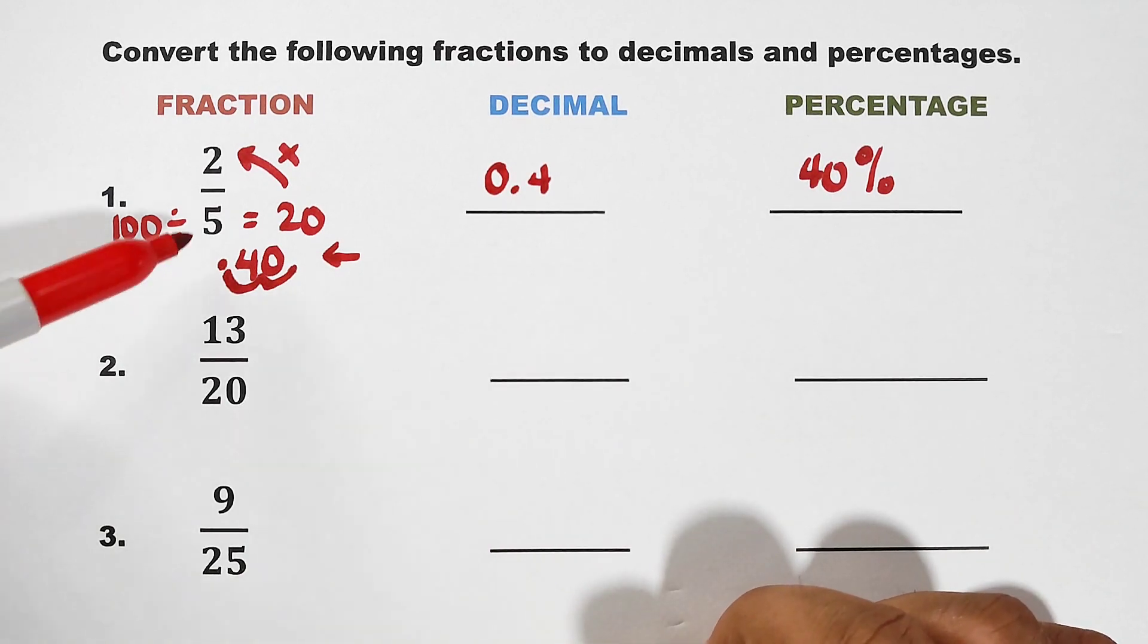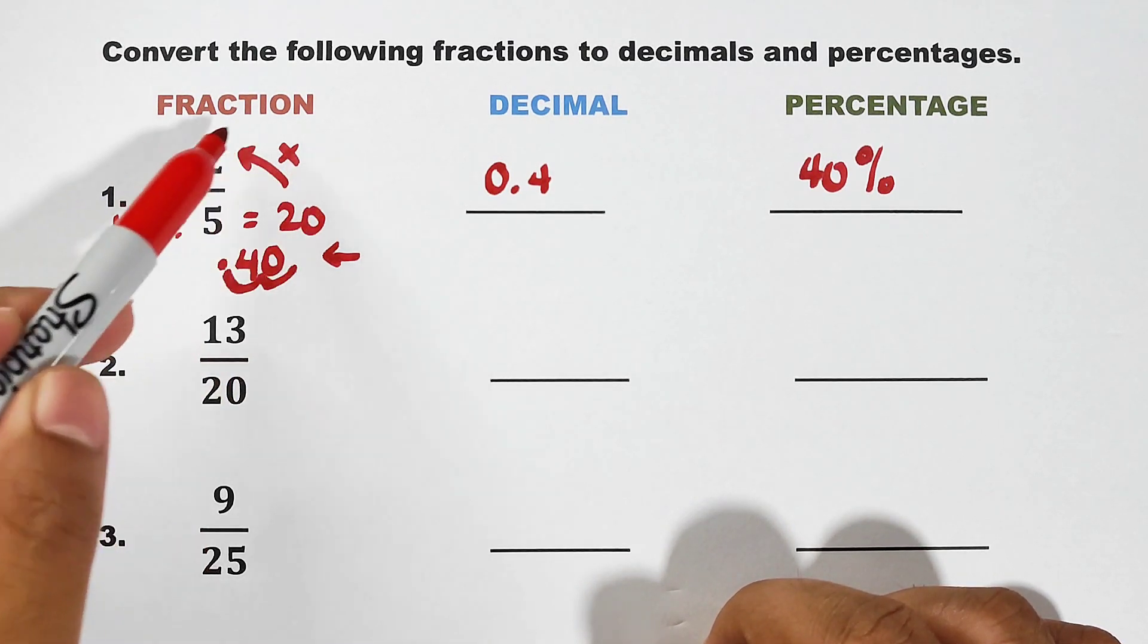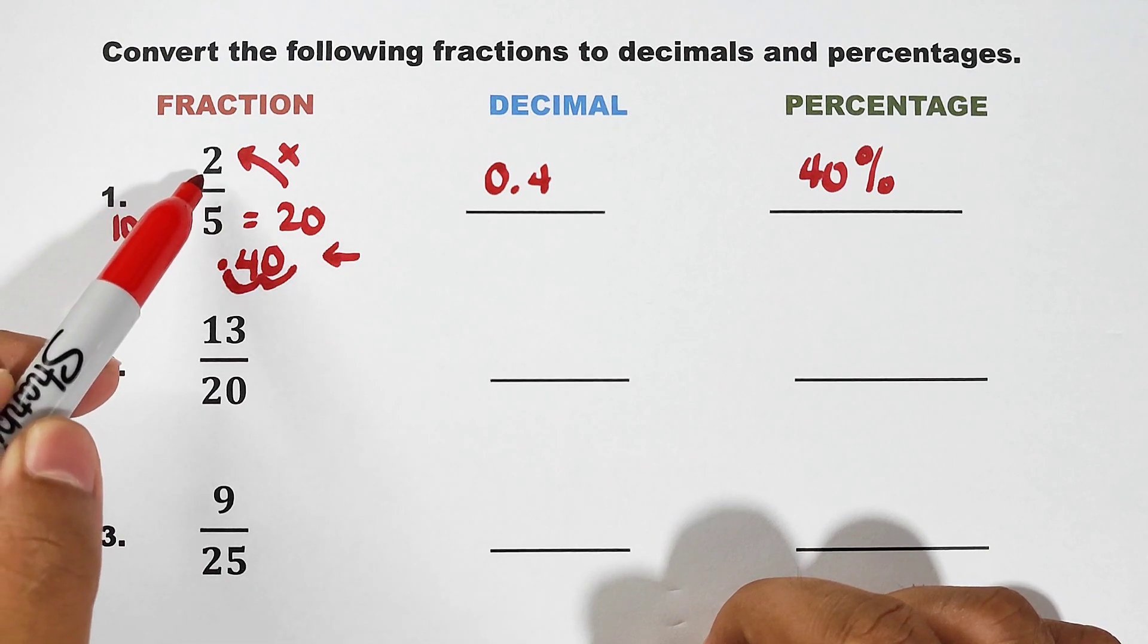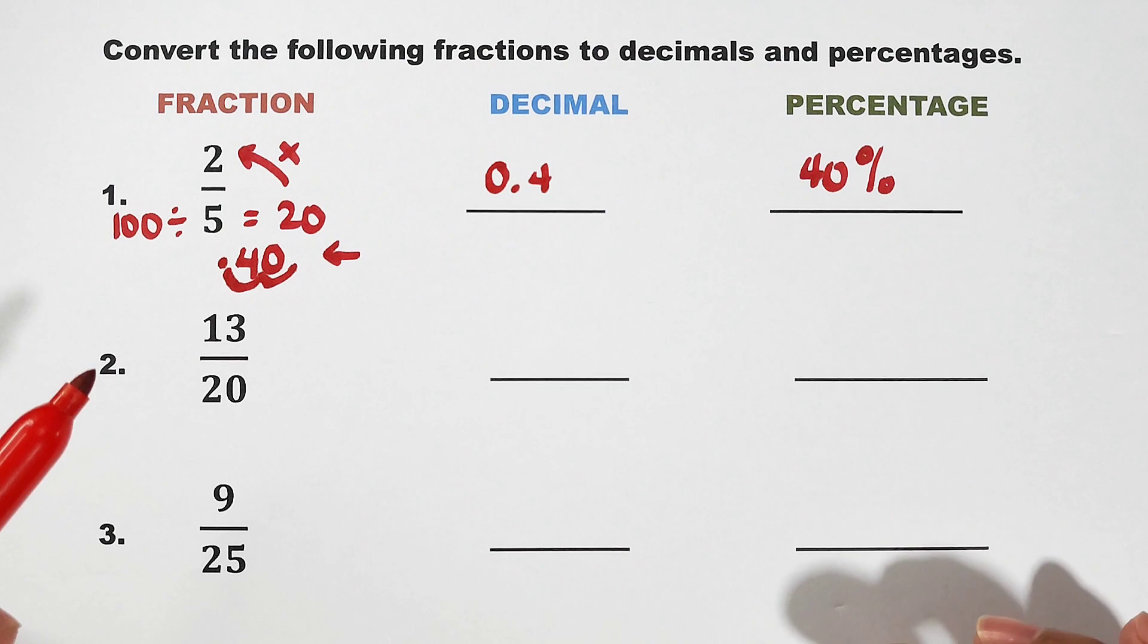Recap. You have this given fraction, divide 100 using your denominator. 100 divided by 5 is 20. Then multiply it by your numerator and then you can have the 40. So that is the decimal and percentage.